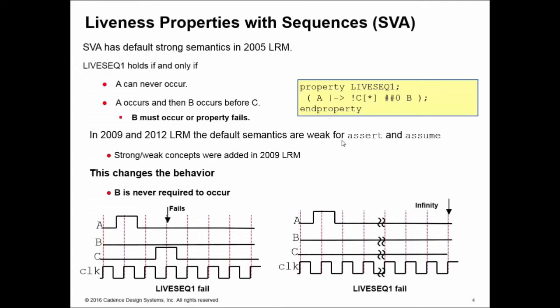In the 2009 LRM, the keywords strong and weak, and therefore the concepts of strong/weak were added. The way in which we can think about this property then is that there's two ways in which this can fail if A occurs.